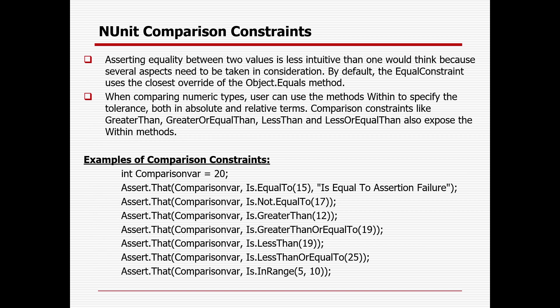Today we will learn about comparison constraints. Asserting equality between two values is less intuitive than one would think because several aspects need to be considered. By default, the equal constraint uses the closest override of the Object.Equals method. When comparing numeric types, users can use the Within method to specify tolerance, both in absolute and relative terms. Comparison constraints like GreaterThan, GreaterThanOrEqualTo, LessThan, LessThanOrEqualTo, EqualTo, NotEqualTo, and InRange also expose the Within method.